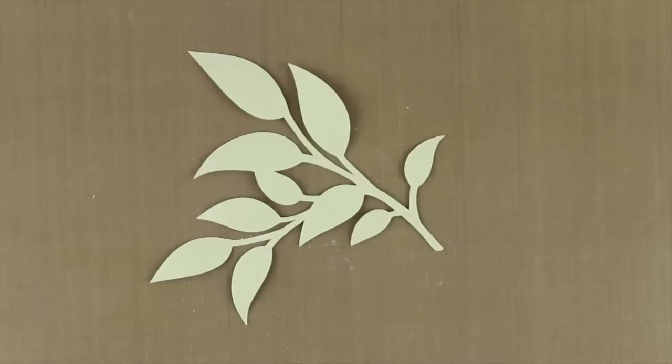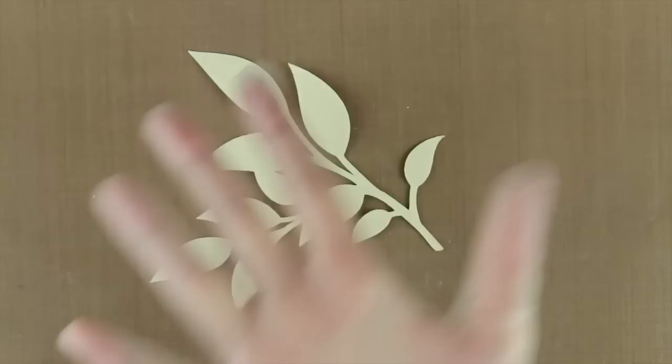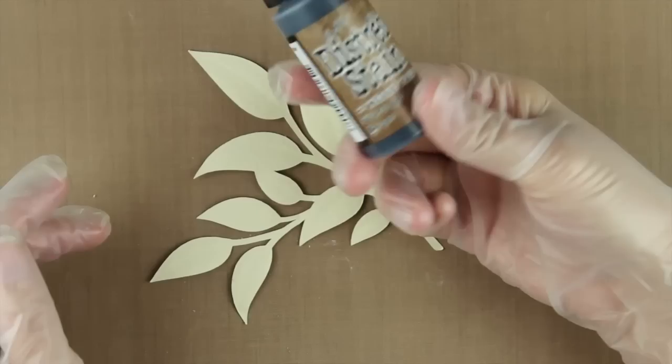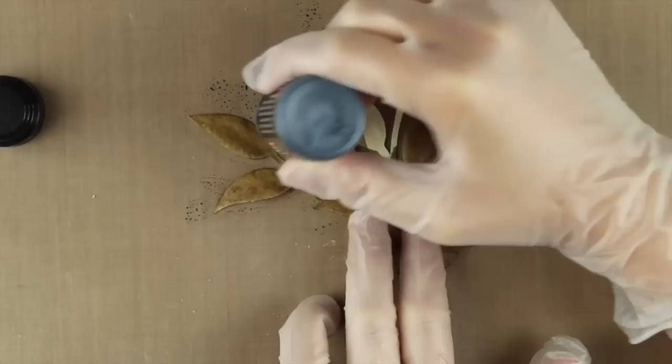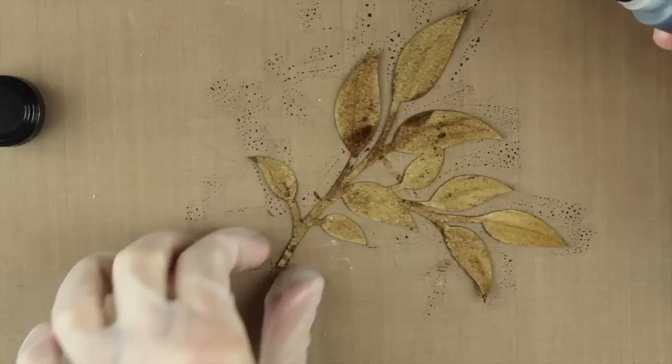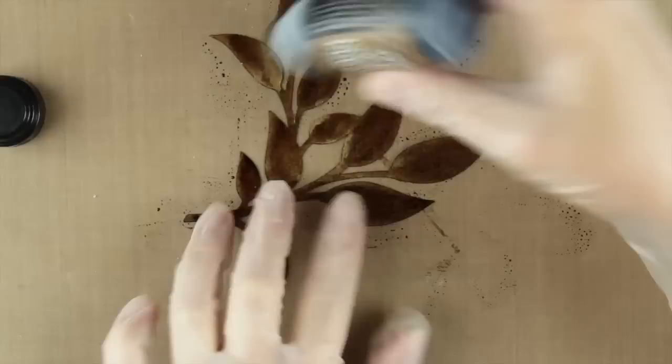I am putting some gloves on my hands because I don't like to have inky fingers. And then I am going to use some Distress Walnut Stain Ink. I'm just going to color this. I am basically going to go around and just color this. And that's the main coloration.